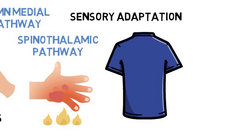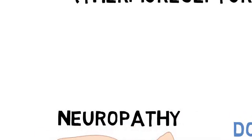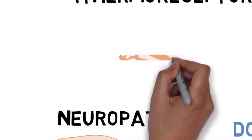When somatic sensation goes wrong, it can lead to various neurological disorders. For example, in neuropathy, damage to sensory nerves causes numbness, tingling, or pain.